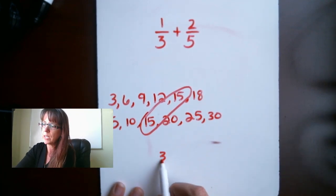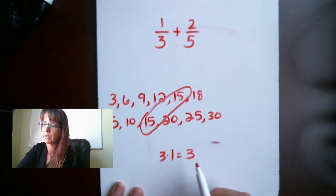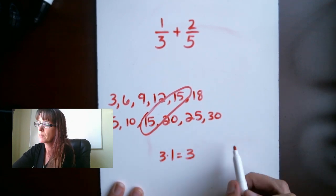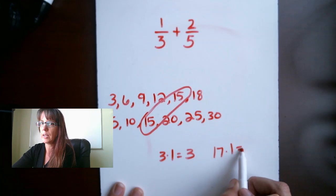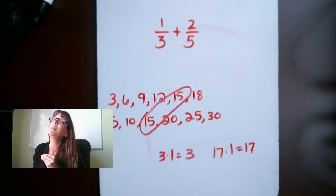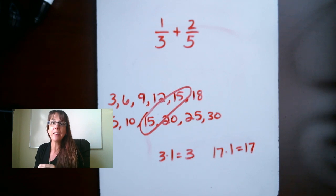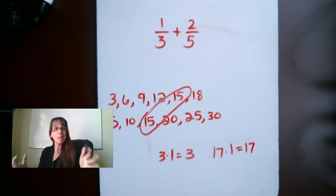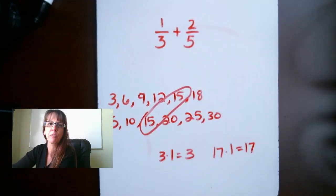With that same thing, let's talk about this. 3 times 1 equals 3. We're going back to some real basic math here. 17 times 1 equals 17. We are allowed to multiply anything by 1. That is called the identity property. Why is that important? Because that's what we're going to be doing with our fractions up here.